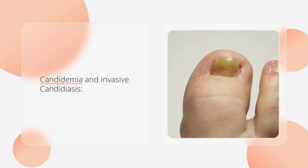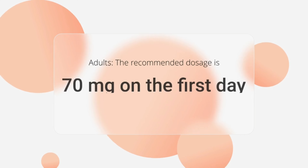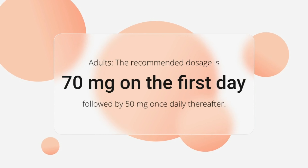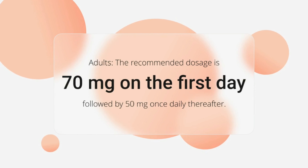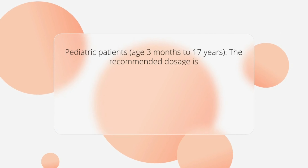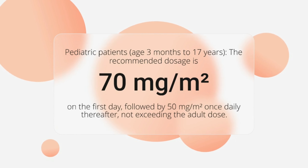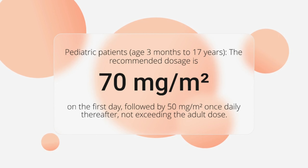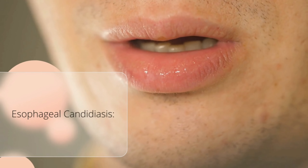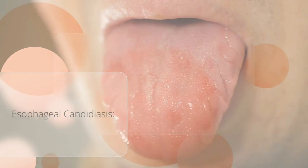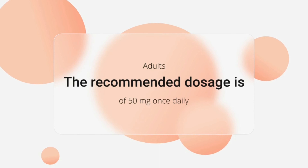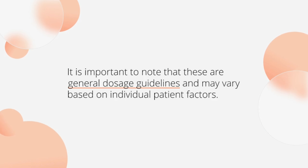In candidemia and invasive candidiasis, the recommended dosage for adults is 70 mg on the first day, followed by 50 mg once daily thereafter. For pediatric patients, the dosage is 70 mg per square meter on the first day, followed by 50 mg per square meter once daily thereafter, not exceeding the adult dose. In esophageal candidiasis, the recommended dosage for adults is 50 mg once daily. It is important to note that these are general dosage guidelines and may vary based on individual patient factors.